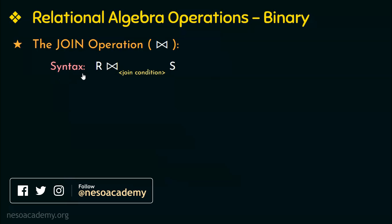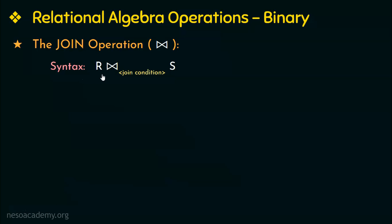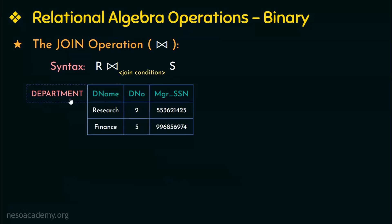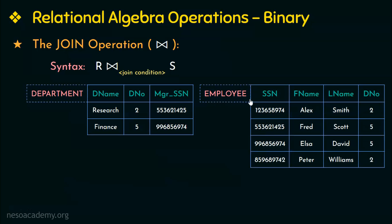This is the syntax of the join operation. When we want to join two relations, say relation R and relation S, we write the first relation followed by the join operator and the join condition in the subscript, followed by the second relation name. For example, I have taken a relation department with department name, department number and manager SSN as its attributes, and another relation employee with SSN, first name, last name and D number as its attributes.